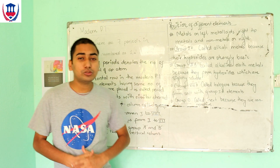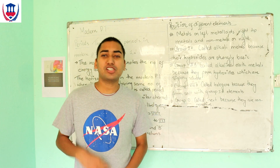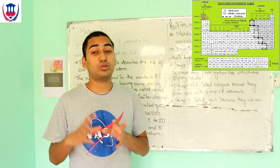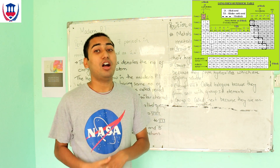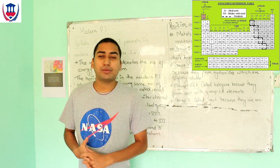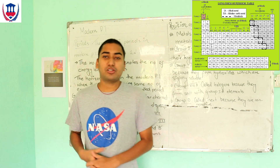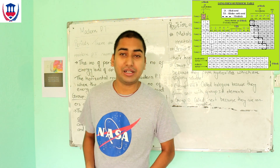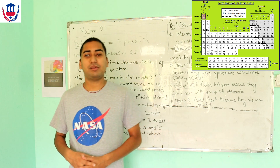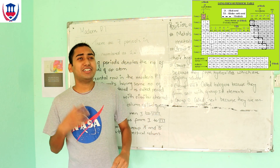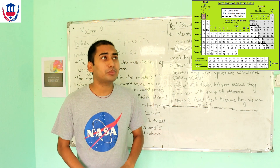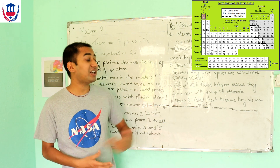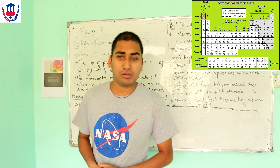Group 0 contains non-reactive elements. If you look at Group 0, these elements are in the octet state, making them non-reactive. These are known as the noble gases.